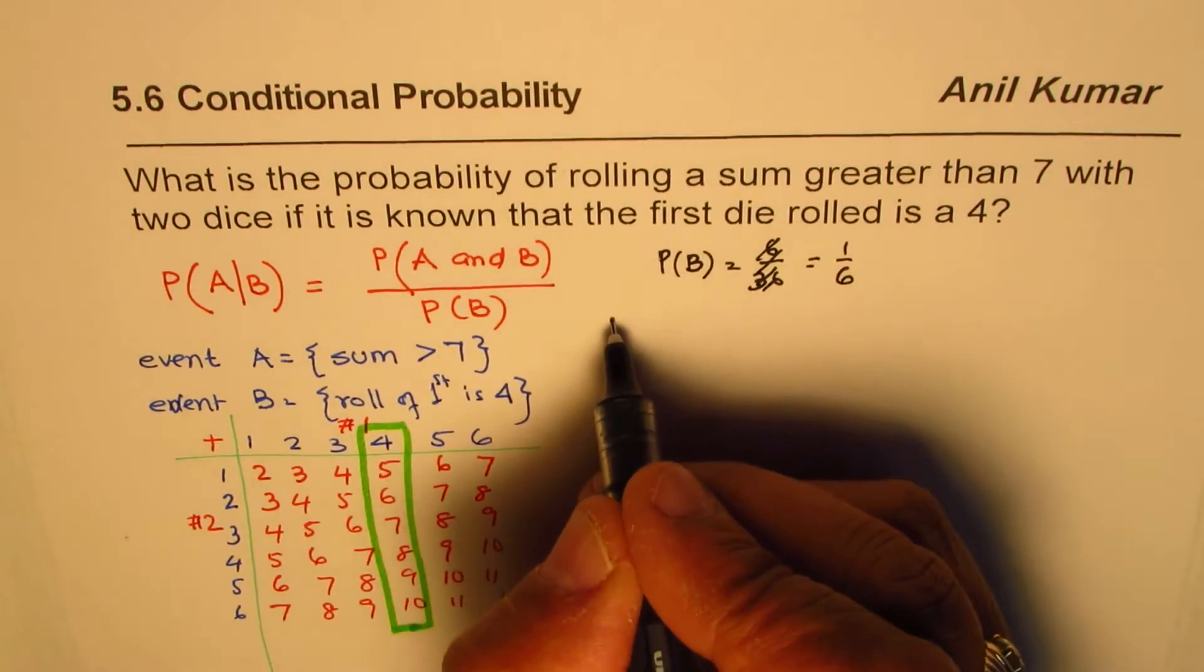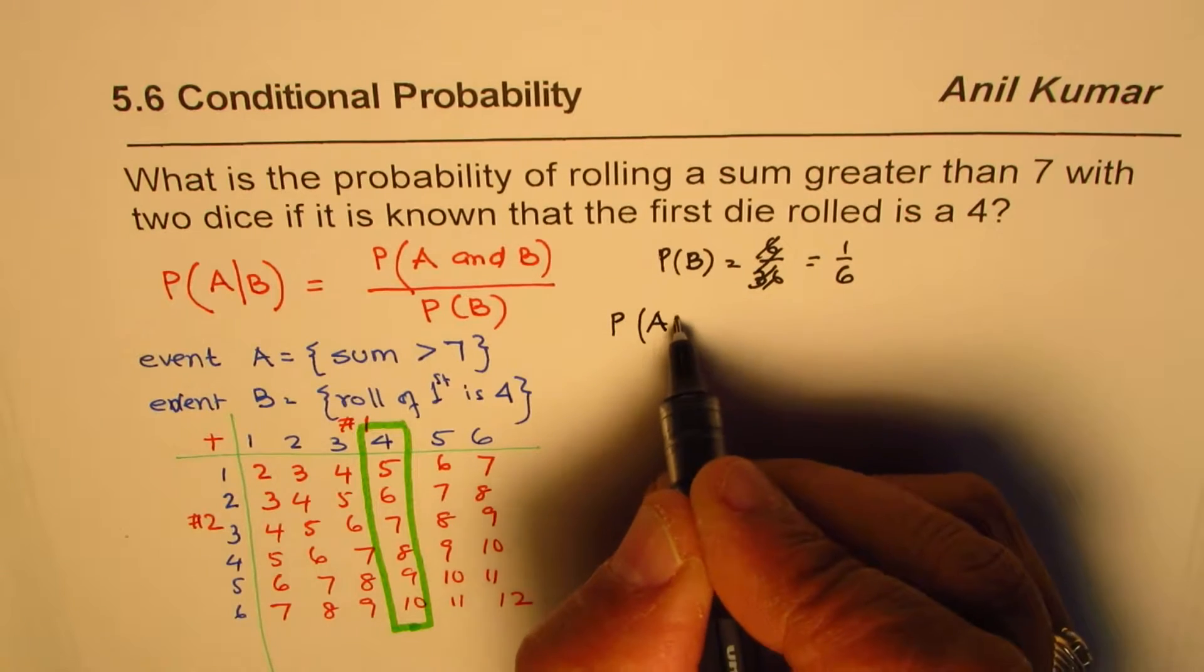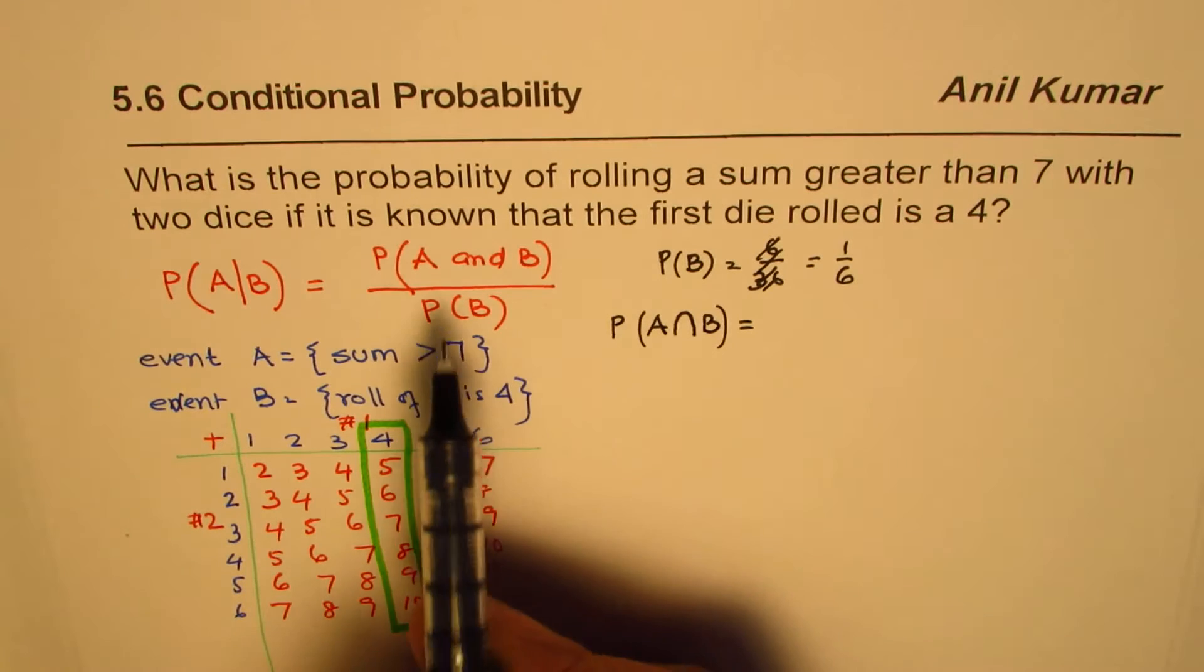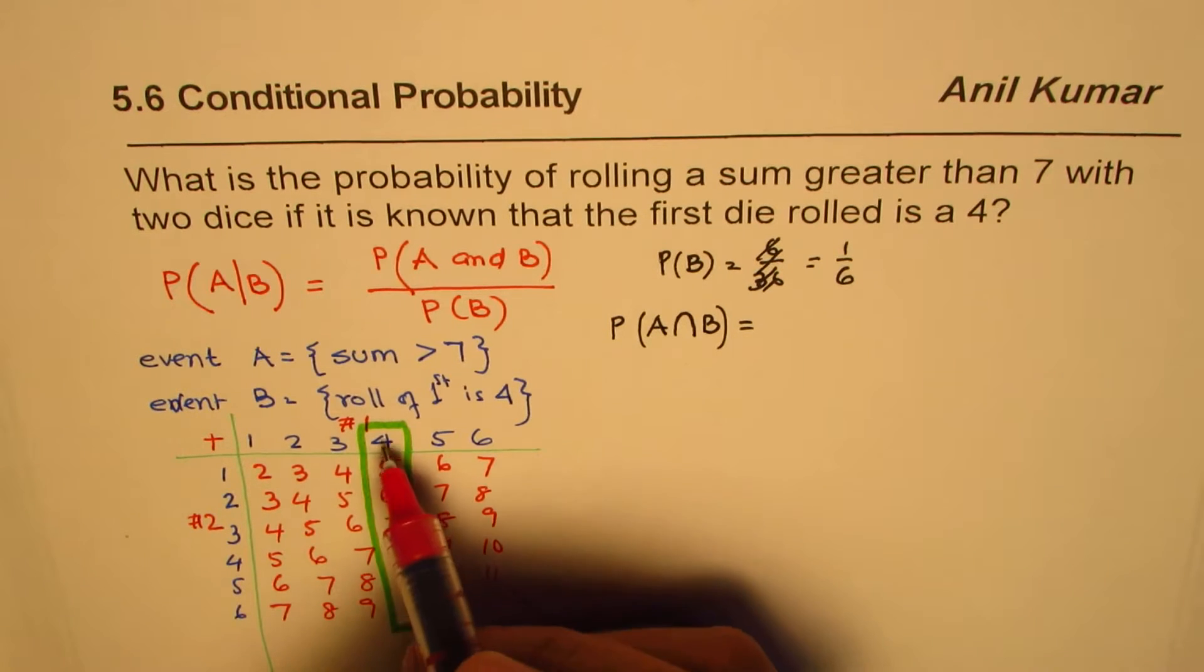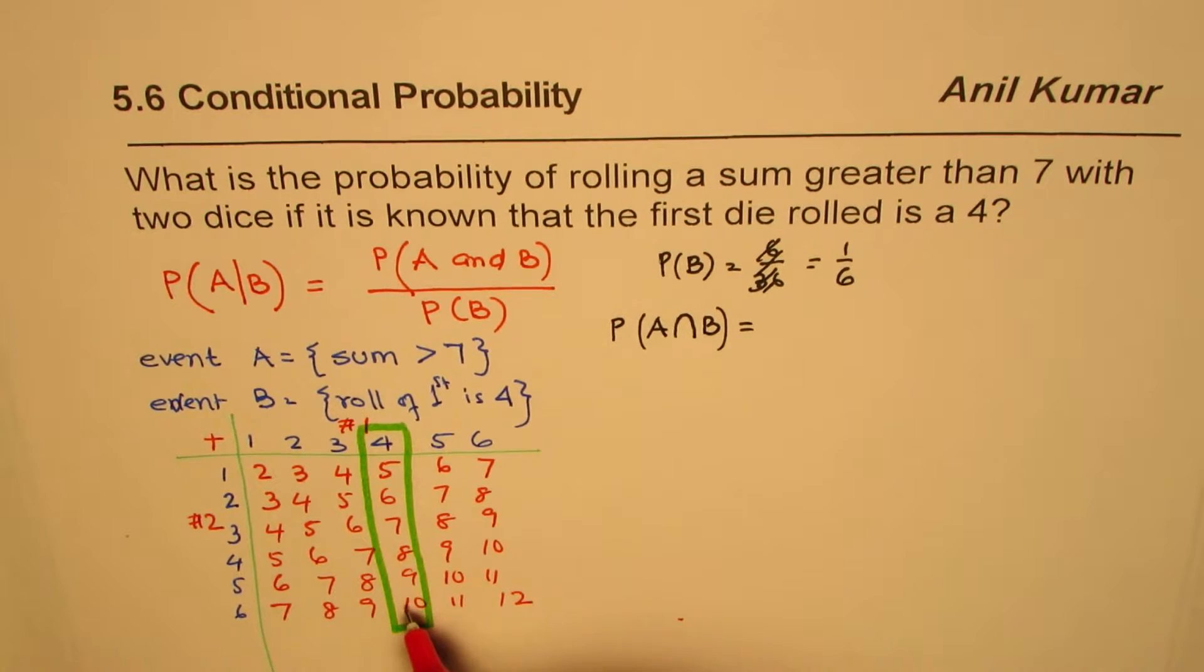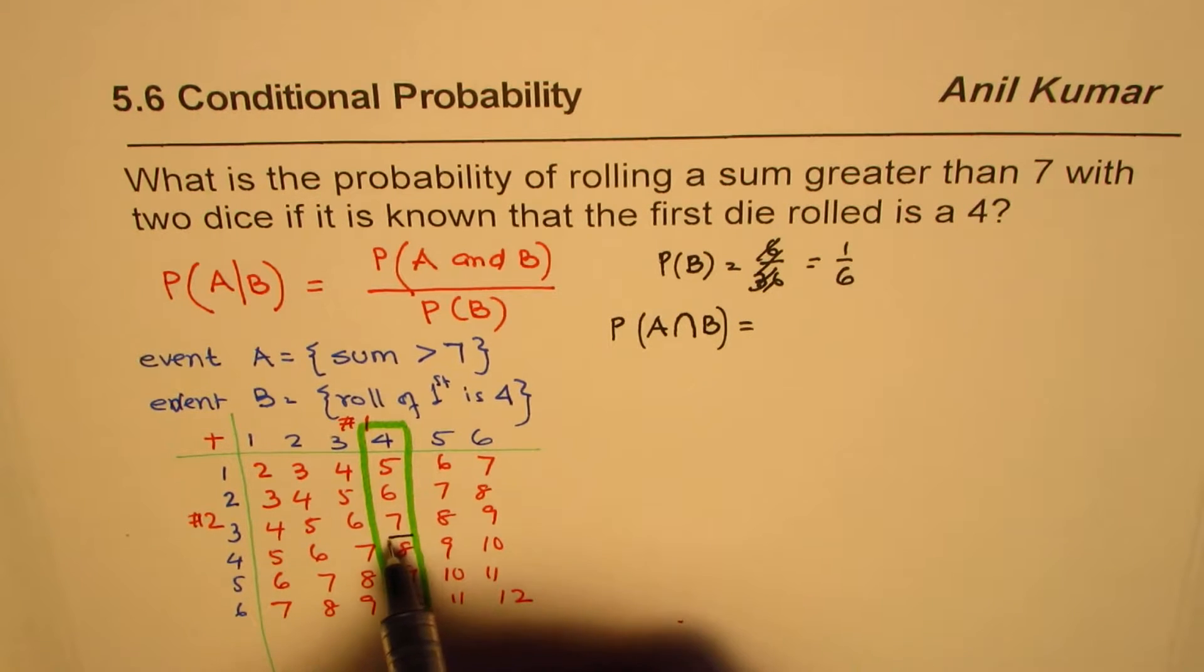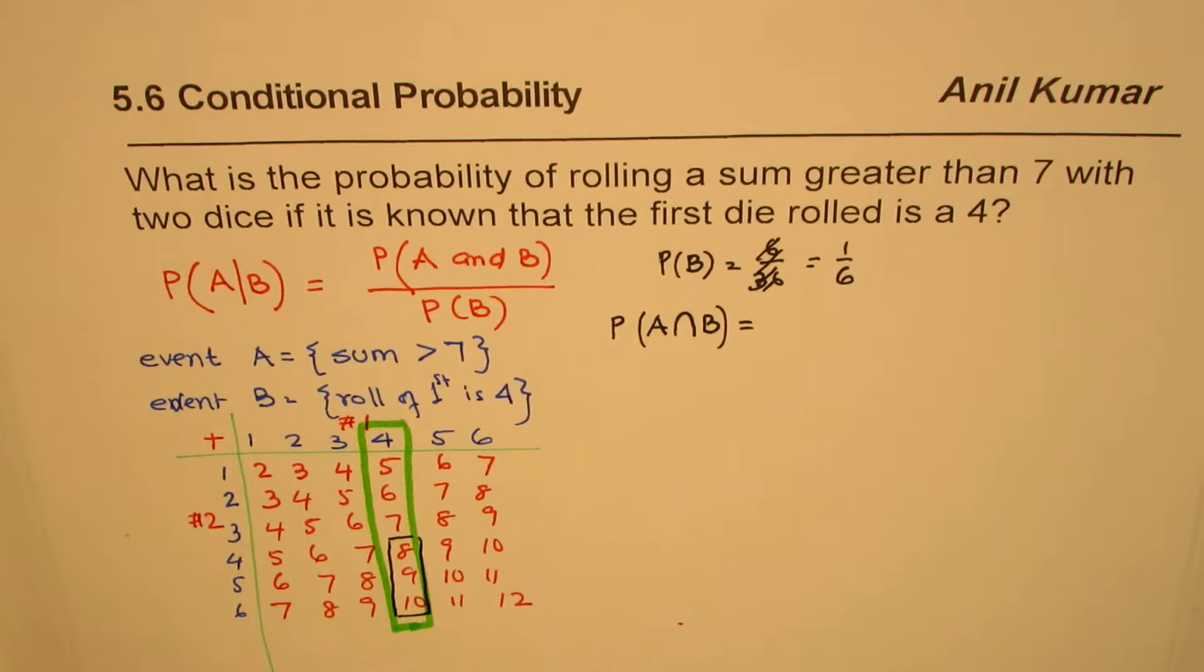Now how about the probability of A intersection B? Now A is sum greater than 7. Now we are restricted to the domain where the first die gets this 4. Now sum greater than 7, in this case, is these 3 numbers. 8, 9, and 10.